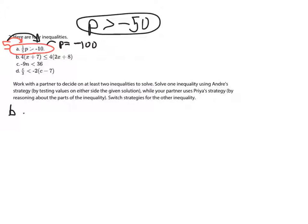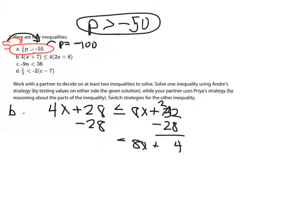If I look at b, I'm going to go ahead and distribute those 4s so I have 4x + 28 is less than or equal to 8x + 32. I'm not going to use Priya's strategy this time. Let's use Andre's strategy. So if I solve this, 32 minus 28, plus 8x. These are now equal signs. Subtract 8x, subtract 8x. Negative 4x equals 4, divide both sides by negative 4, x equals negative 1.